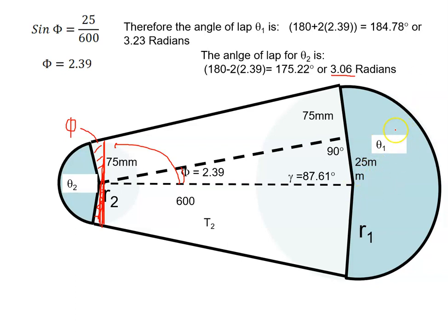Similarly, for theta 1, here's the straight line, from there to there. So all in here, that's all 180 degrees, so I have to add on this bit and this bit, which is also 2.39, so it's 180 degrees plus 2 times 2.39, and that works out to be 184.78 degrees or 3.23 radians.